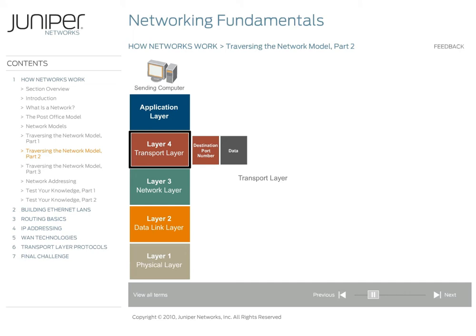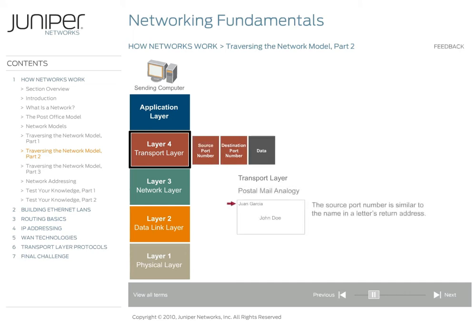The transport layer on the sending computer also includes a source port number in the header, which is similar to the name in the return address. The source port number, typically a random number, uniquely identifies the connection on the sending side. This port allows the receiving computer to carry on multiple sessions with the sending computer without intermixing the data.